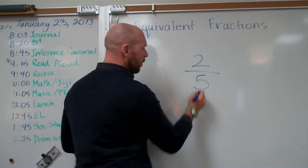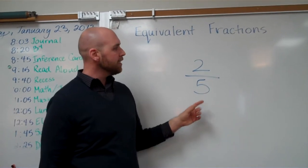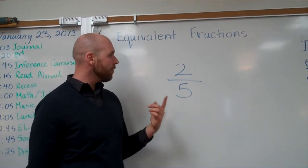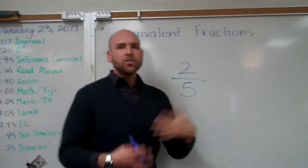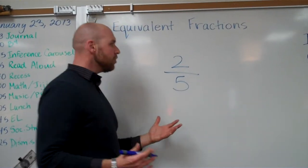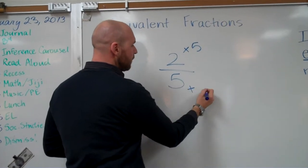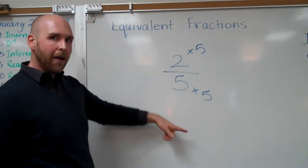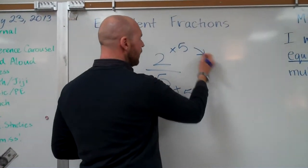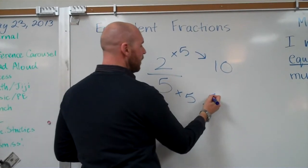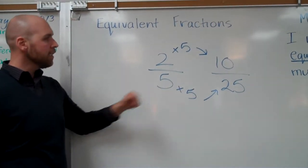Here's two-fifths. Now, can I make an equivalent fraction using division with this one? Probably not. I don't think so because there is not a factor that goes evenly into two and five that will work in this one. So, I'm going to have to use multiplication. So, let's do something a little different. How about five? Two times five, five times five. Because remember, what I did at the top, I have to do at the bottom. That makes it equivalent. So, two times five equals ten. Five times five equals twenty-five. Ten twenty-fifths is equivalent to two-fifths.